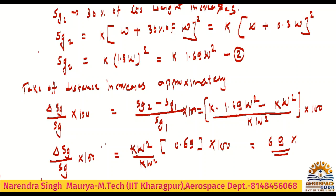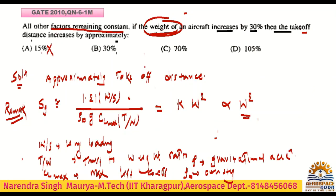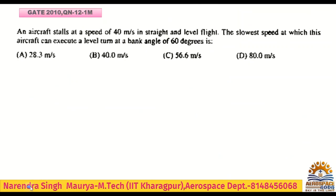The correct answer is option C — 69 percent. In an examination you write the equation directly, take the ratio Sg2 minus Sg1 over Sg1, and get the percentage increment in takeoff distance quickly. Next question: gate 2010 question number 12, for one mark.